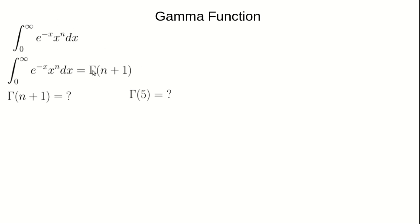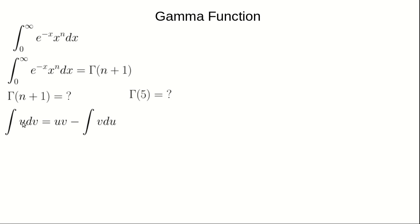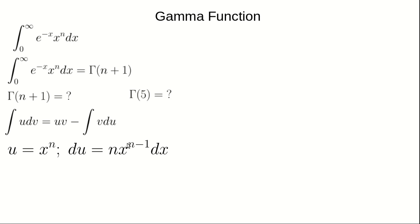To solve the gamma function integral we use integration by parts, given by the standard formula. Our u is x raised to the power n, and dv is e raised to the power minus x dx. Differentiating u gives us the expression for du, and integrating dv gives v equal to minus e raised to the power minus x.